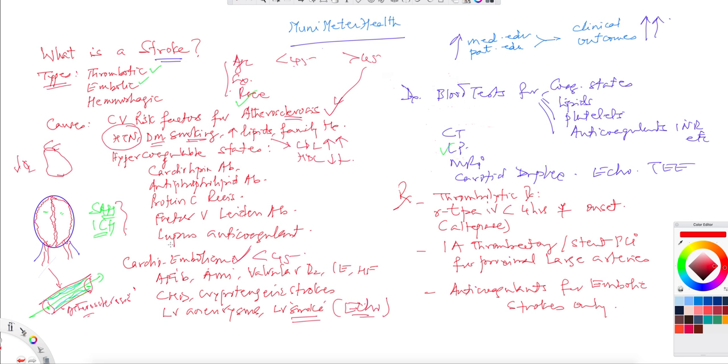Now there might be hypercoagulable states. Cardiolipin antibodies, lupus for instance, and somebody who has SLE.